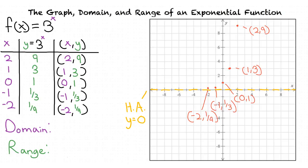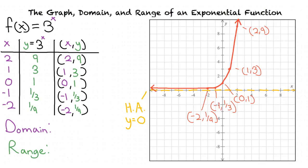Now let's graph our function. Once we graph our function, we can find the domain and range. For domain, we can see that the graph continues in both directions of the x-axis, so our domain is negative infinity to infinity. As for our range, as the x values get larger the y values also get larger, and when the x values get smaller the y values get closer to 0 but do not reach 0. This means our range is 0 to infinity, not including 0.